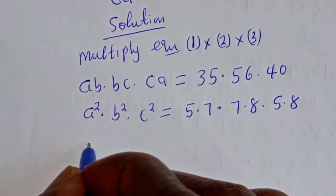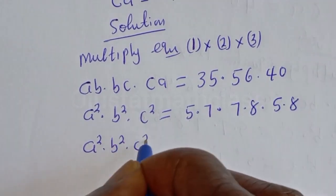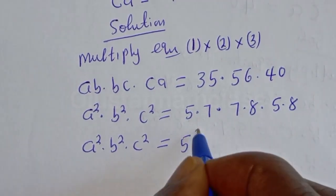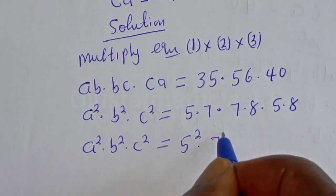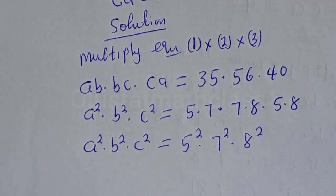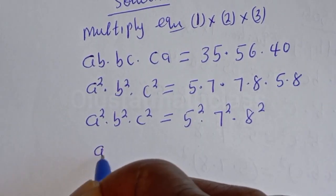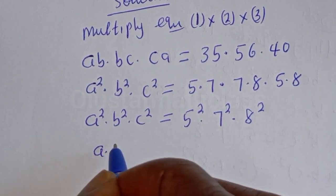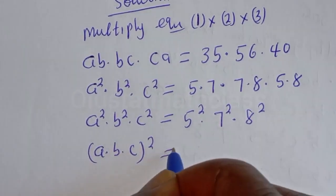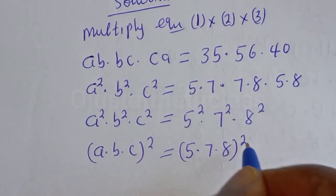Then A squared multiplied by B squared multiplied by C squared is equal to: here we have 5 and 5, so that's 5 squared; 7 and 7, so that's 7 squared; and 8 and 8, so that's 8 squared. This can be written as (A multiplied by B multiplied by C) all squared is equal to (5 multiplied by 7 multiplied by 8) all squared.